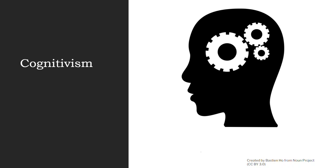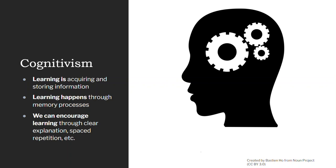Cognitivism looks at learning differently. It's more about what happens in the brain than our behavior. In cognitivism, learning is when we're acquiring and storing information, interpreting and understanding it. Again, this is an oversimplification, but basically it's the stuff that happens in the brain. Learning happens through memory processes and we can encourage learning through clear explanation, spaced repetition, those things that help us remember and understand. This is how a lot of instructional designers think, how a lot of education is designed.